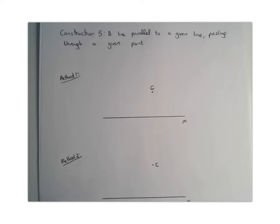For construction number 5, we have two methods and I'm going to talk you through both of those. Both methods are required. One is using a straight edge and compass and the other is using your set square.